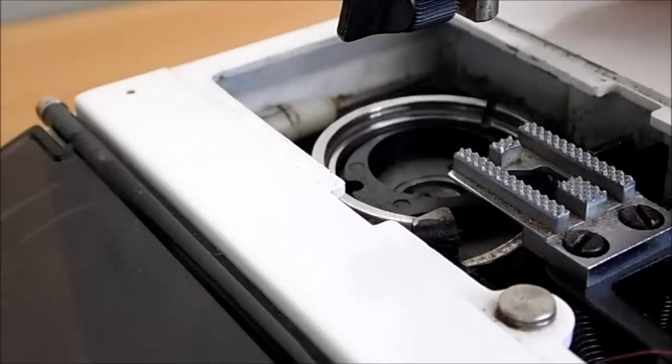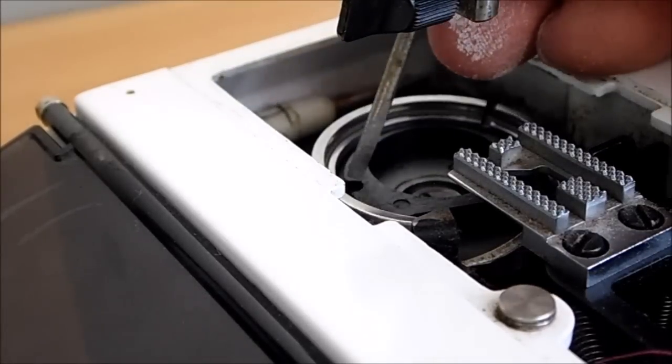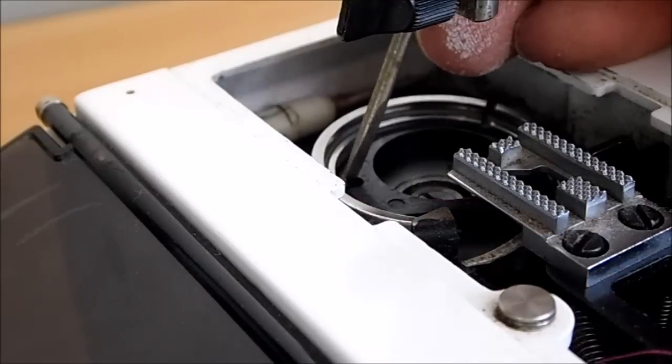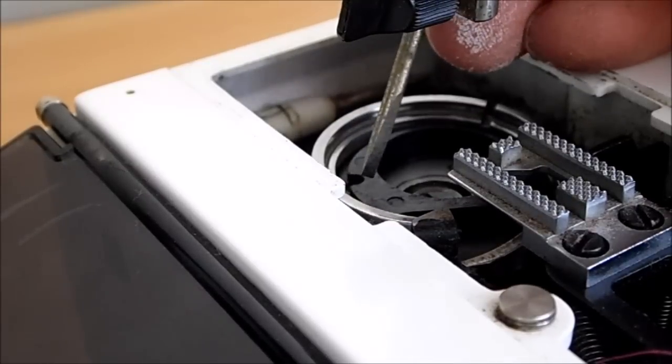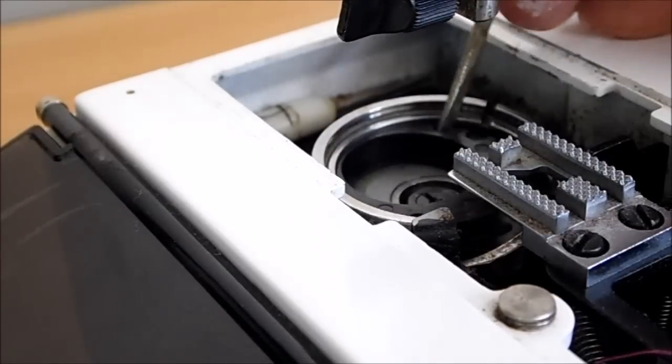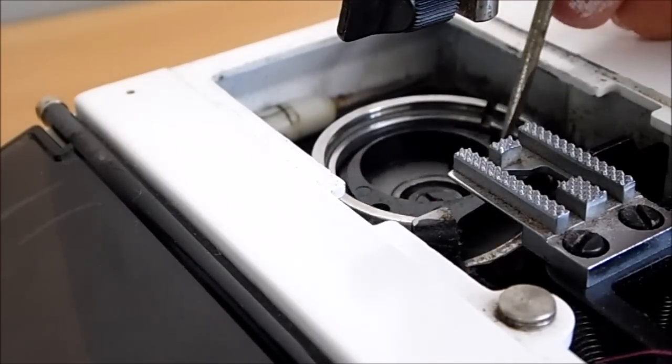When you put your bobbin case in, you're just going to make sure that your bobbin case holder is in place. That normally comes at the slide - your left-hand screw hole will be slightly higher and the one on your right-hand side will be slightly lower.